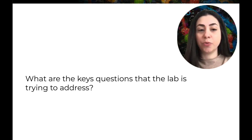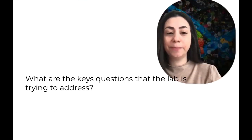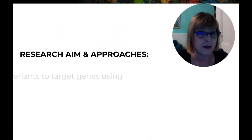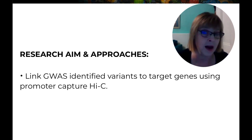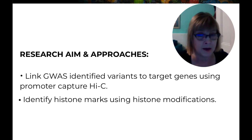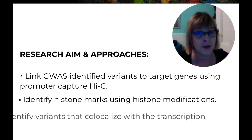So what are the key questions that you're trying to address and what approaches are you using? We know that there are at least 150 regions of the genome that are associated with breast cancer risk, and we want to know how each and every one of those works. Almost all of the variants identified through genome-wide association studies are non-coding, so the underlying mechanisms are generally going to be about a genetic variant influencing expression of a target gene. We use genome-wide data such as Promoter Capture HiC for linking variants to target genes, and histone modifications to see where variants align with something like an enhancer mark.